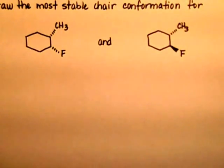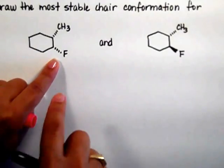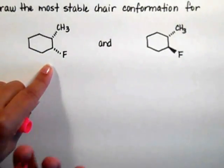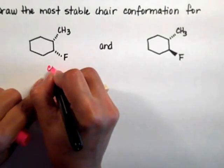I need to draw the most stable chair of these two compounds. Notice that this one right here, both my substituents are pointing to the back but they're pointing to the same side, so this is the cis.